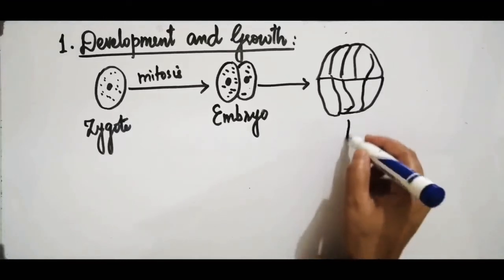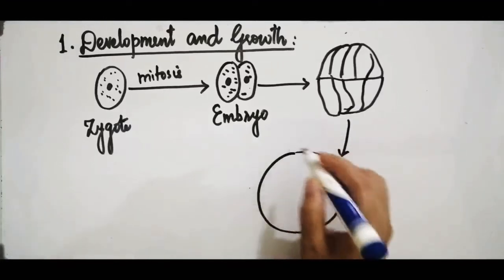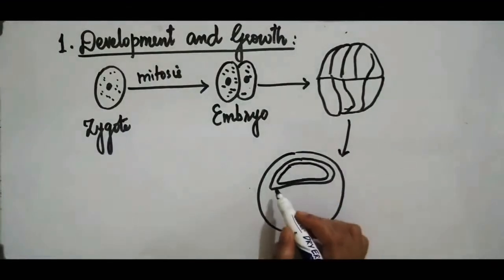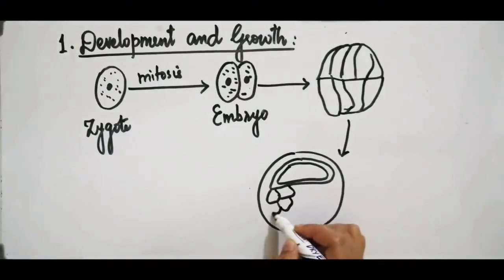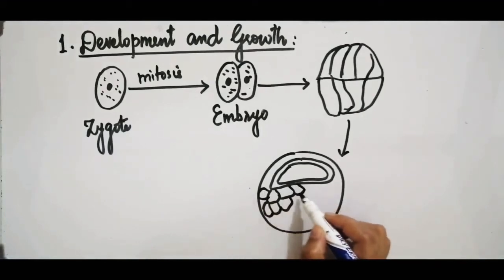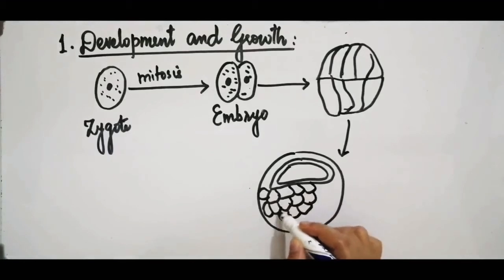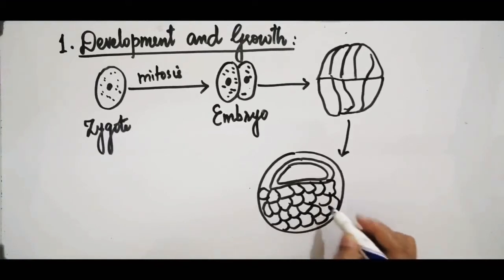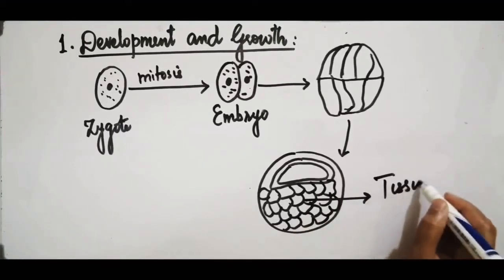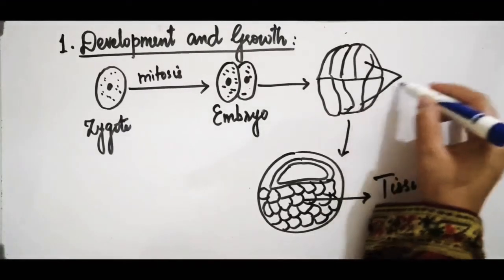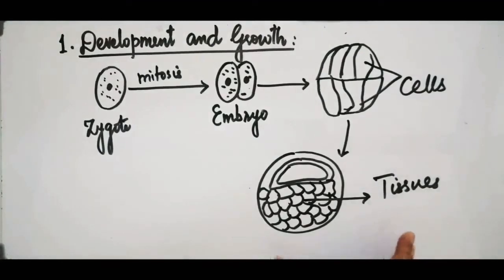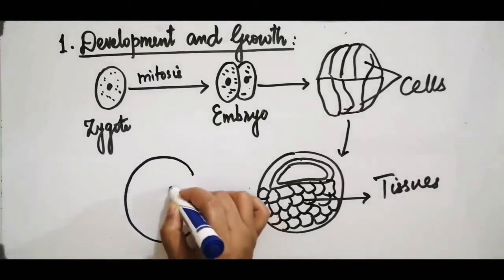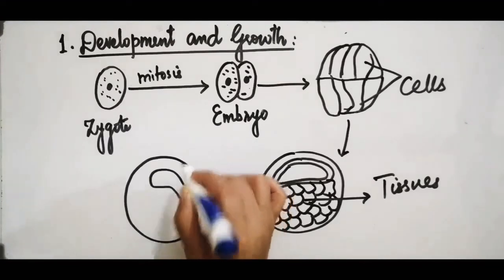The multicellular structure develops into many cells, forming a multicellular body. Inside this body, tissues begin to form — that is, collections or masses of cells. Different cells form collective masses which are now called tissues. After development of different cells, tissues are formed, and then this structure develops into different organs inside the multicellular body.